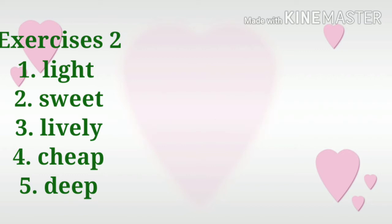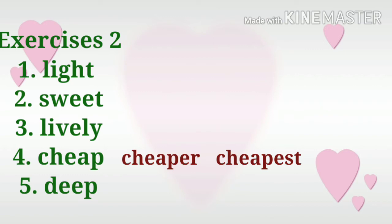Let's now move to number four. Cheap is the word. We're going to make it in the comparative degree and superlative degree. From the word cheap, it becomes cheaper — we add ER to make it in the comparative degree. And then in the superlative degree, we add EST, so it becomes cheapest. So: cheap, cheaper, cheapest.